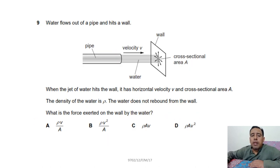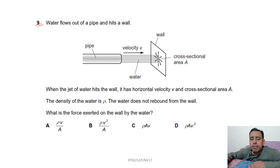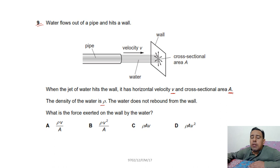Question 9: water with velocity v exits a pipe of cross-sectional area A and strikes a wall. The water does not rebound. There is no vertical motion. The force exerted on the wall is found using the rate of change of momentum: F = mv/t.